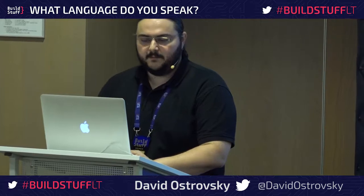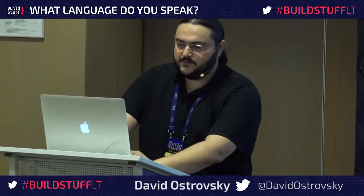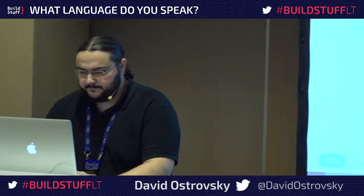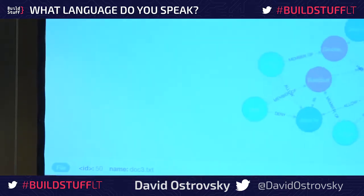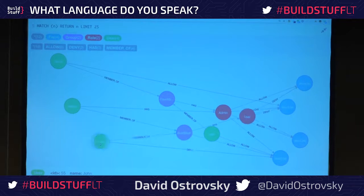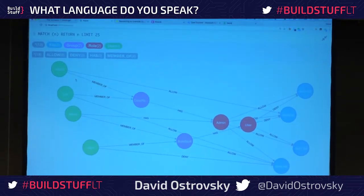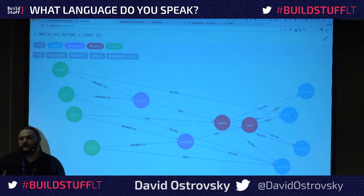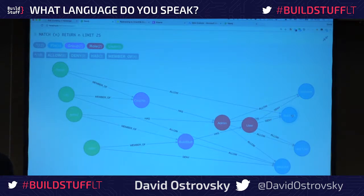If they were to implement this as a permission system on a graph, it would look something like this: we have Files, Groups, Roles, and Users. We have four documents (doc1, doc2, doc3, doc4) and four users (David, Arthur, John, and you). A user can have direct permissions on a document, or belong to a group that has permissions, or have a role with permissions on documents, or a group can have a role — giving you a bunch of different interconnected rules. If you try to represent this in SQL, same issue as before — a bunch of joins, very inefficient.